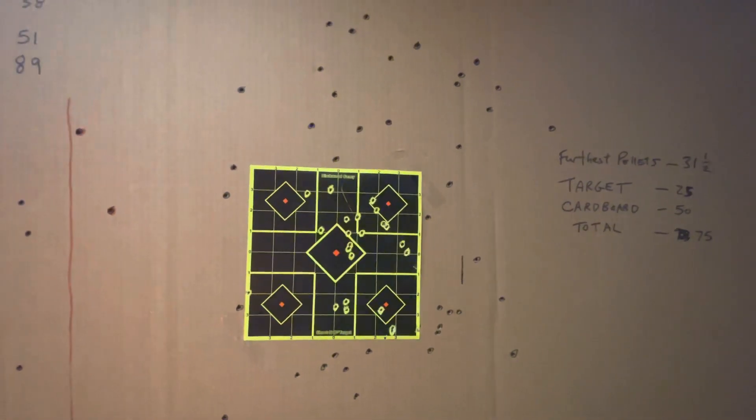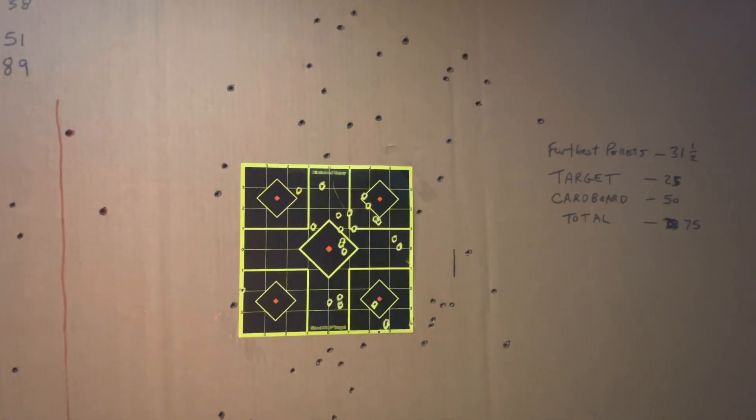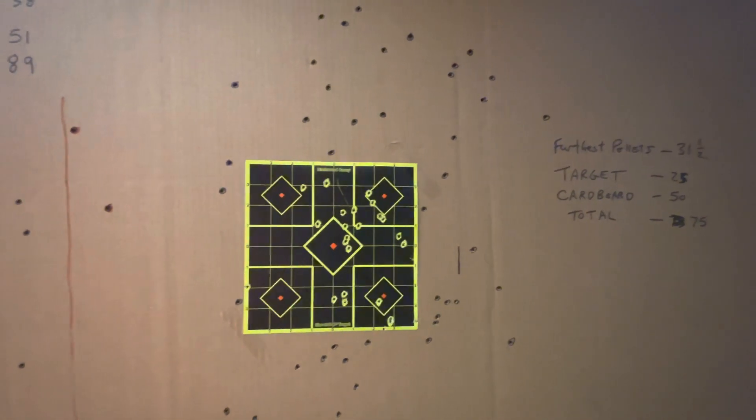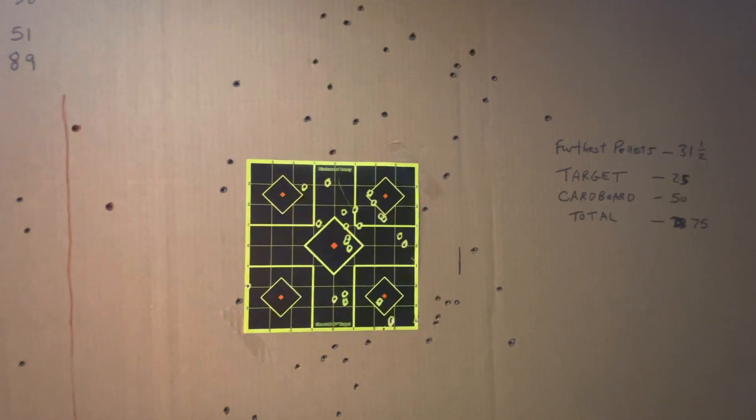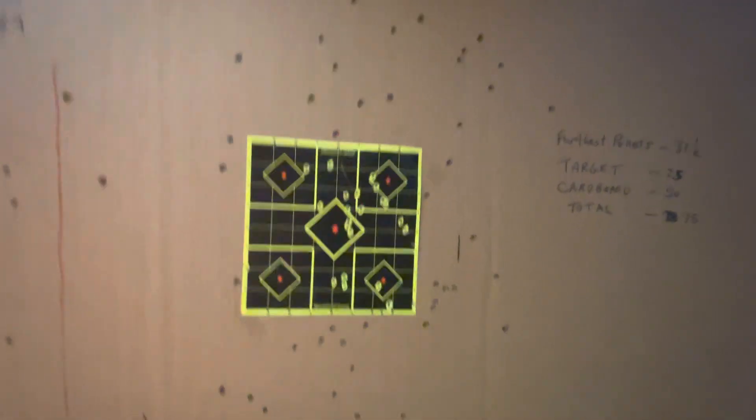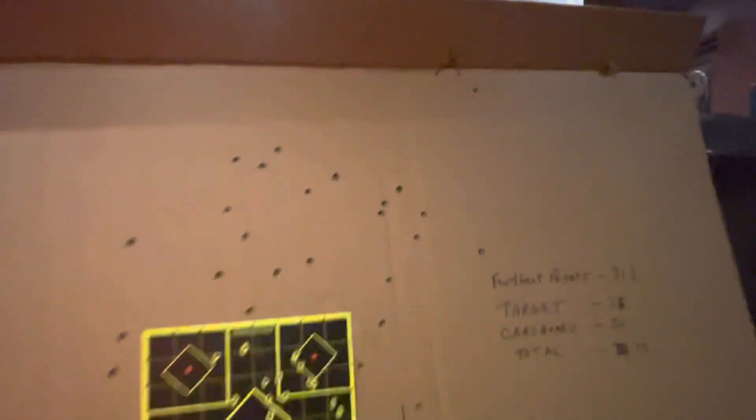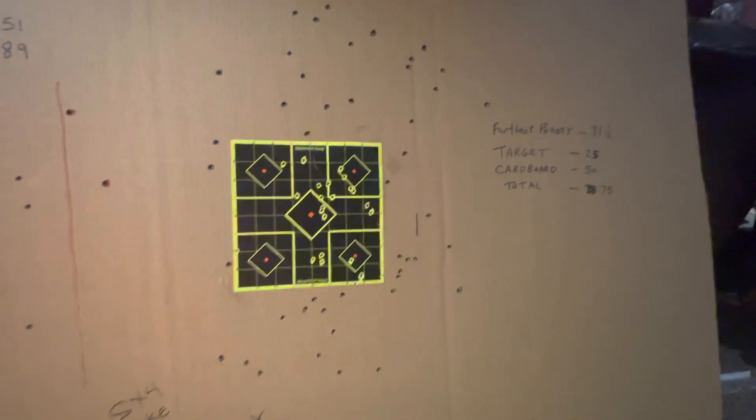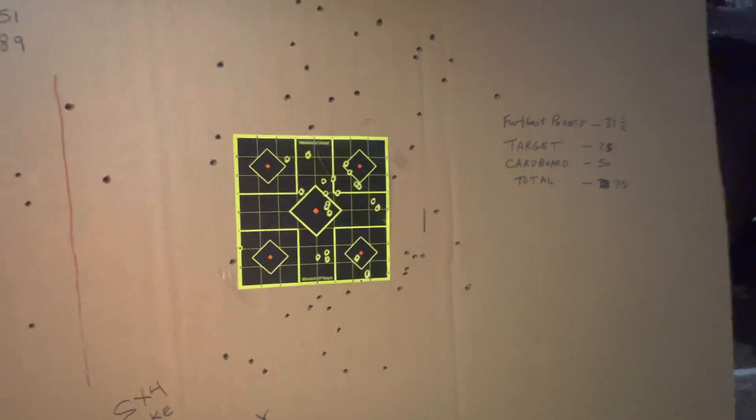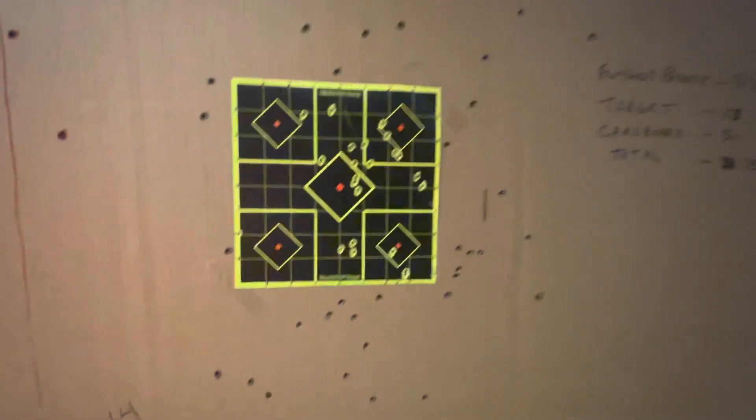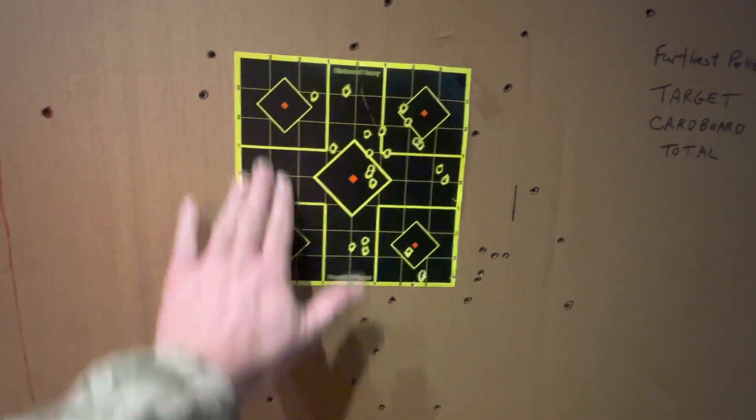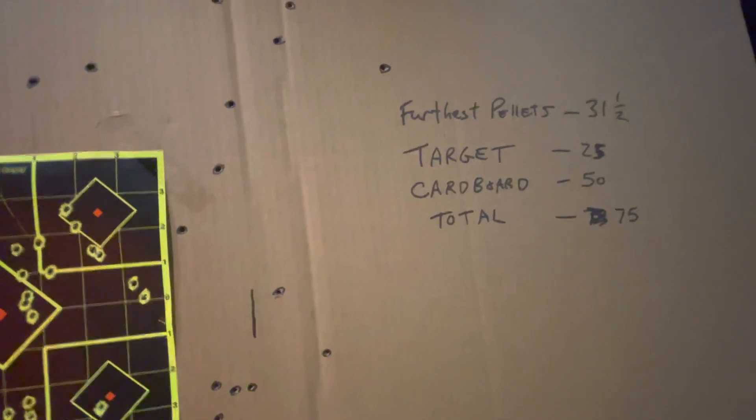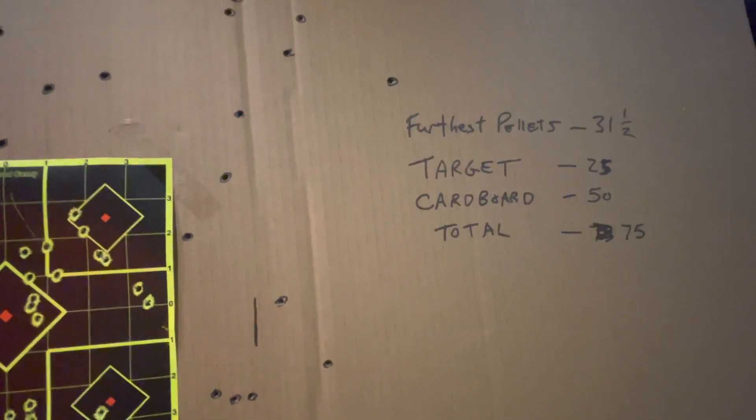This is the 2¾ inch at 20 yards. The furthest pellets were 31½ inches apart - this one down here and this one up here. The rest of the pellets were pretty close. If you notice the pattern here, we're missing quite a few pellets right here. We had 25 pellets on target, 50 pellets on the cardboard, for a total of 75 BBs.